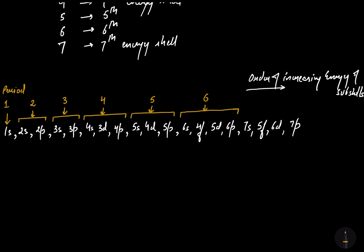Now the period number 7 corresponds to 7s because the principal quantum number is 7. Then 7s, then 5f, then 6d, then 7p. The energy of 5f is greater than 7s, that's why it's in the seventh period. The energy of 6d is greater than 5f, that's why it's also in the seventh period. So the filling of 7s, 5f, 6d, and 7p will take place in period number 7.